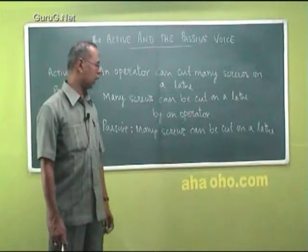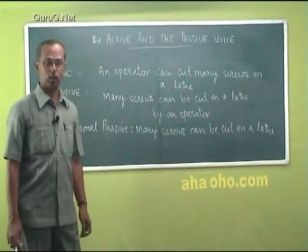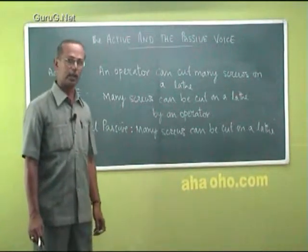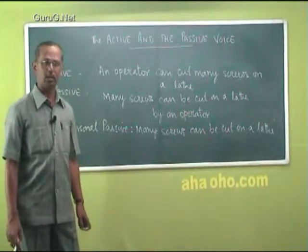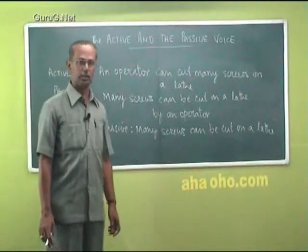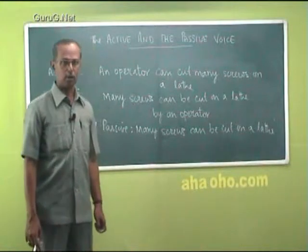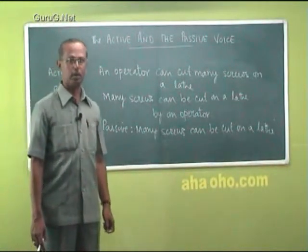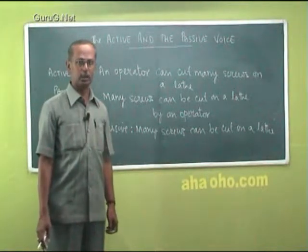The agent 'by an operator' is usually avoided. But in all cases, the passive construction pattern remains the same: noun or pronoun, plus verb, plus the complement or adjunct of the sentence.